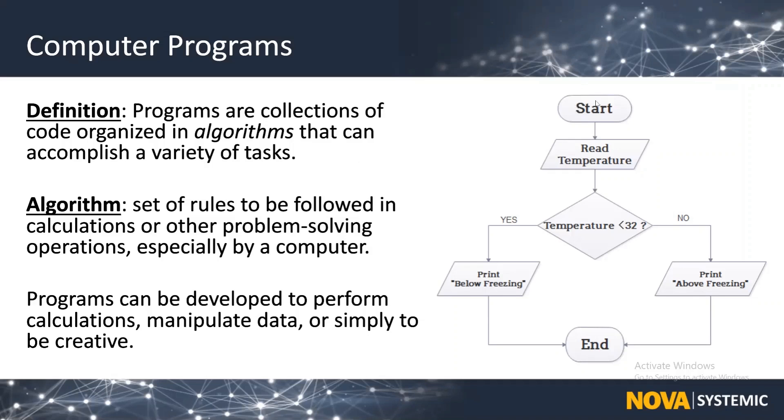Here on the right, we have an image showing a start and an end. This is a small code that reads the temperature. Whether the temperature is less than 32 or greater than 32, it gives us an output. If it's less than 32, it prints 'below freezing.' If not, it says 'above freezing,' and that ends the computer program.